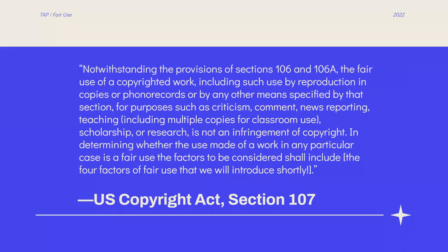This is an excerpt from the US Copyright Act Section 107, which describes and begins to explain fair use. Notwithstanding the provisions of Sections 106 and 106A, the fair use of a copyrighted work, including such use by reproduction in copies or phonorecords, or by any other means specified by that section, for purposes such as criticism, comment, news reporting, teaching, including multiple copies for classroom use, scholarship, or research, is not an infringement of copyright.